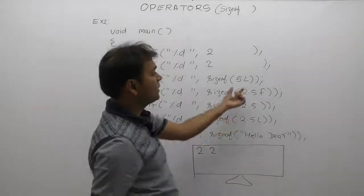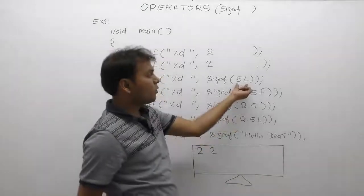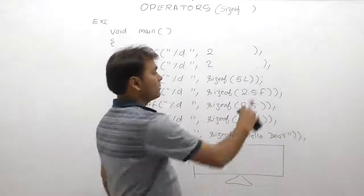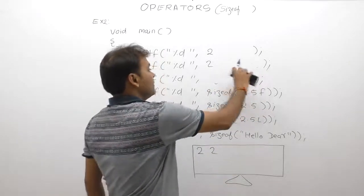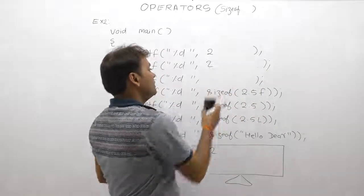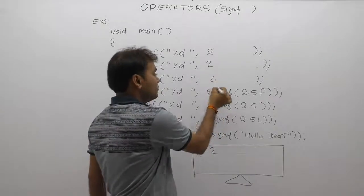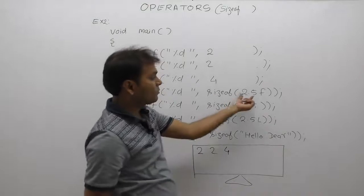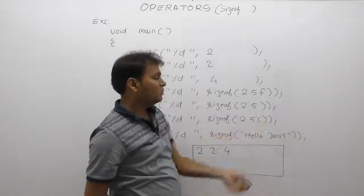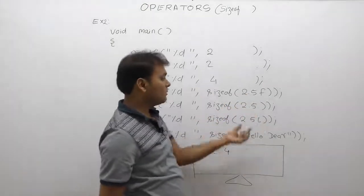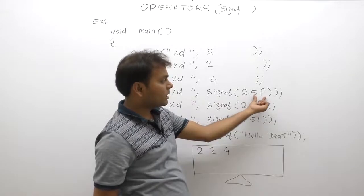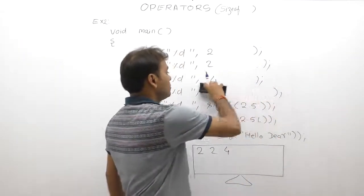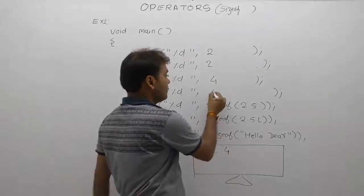Next, sizeof(5L). Here 5 is an integer and L means long, so it is a long integer. The size of a long integer is four bytes, so 4 is printed. Next, sizeof(2.5f). By default a decimal number is of type double, but the qualifier F means float. The size of a float is four bytes, so 4 is printed again.